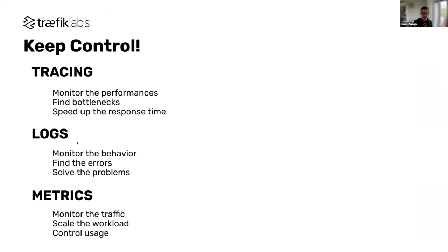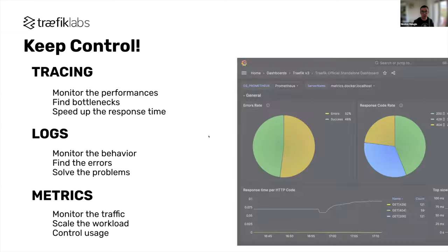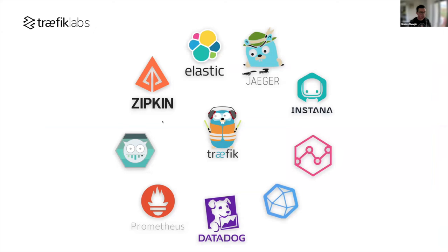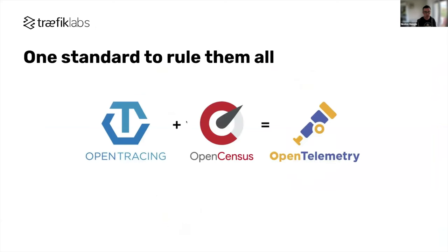Metrics allow you to monitor incoming traffic — how many requests are reaching your infrastructure, the error rate — and let you scale up applications to handle incoming load and scale down when traffic returns to normal. Here you can see a Grafana dashboard. In Traefik v2 we brought support for many vendors, but because they are all different, it was decided to create a standard. That's where OpenTelemetry comes in.